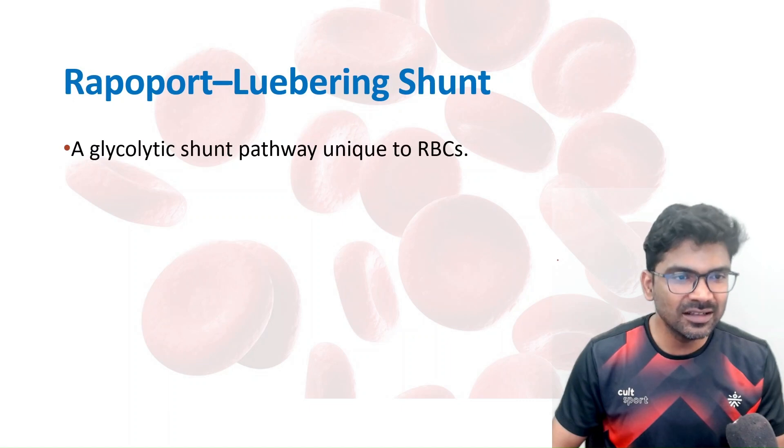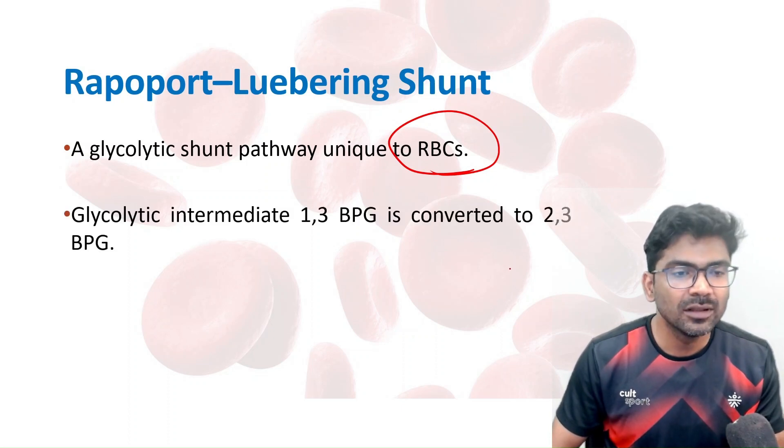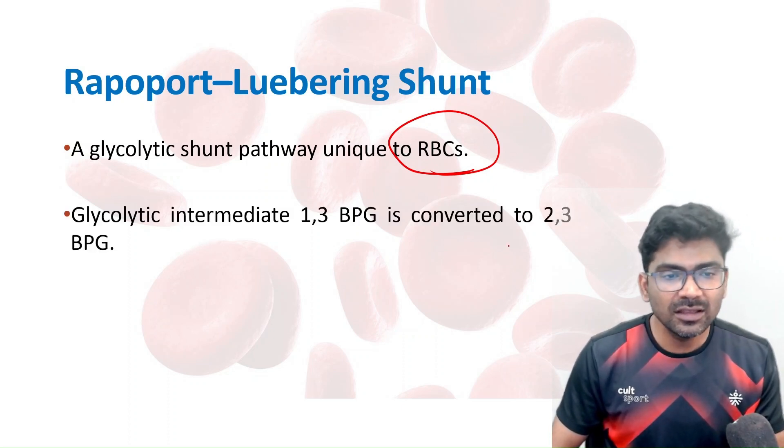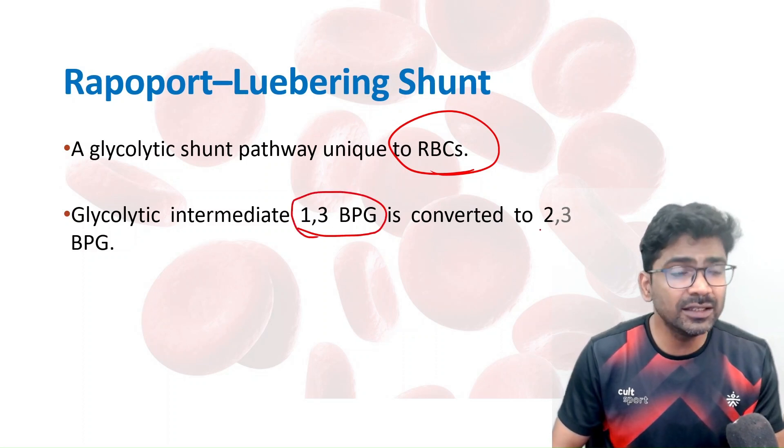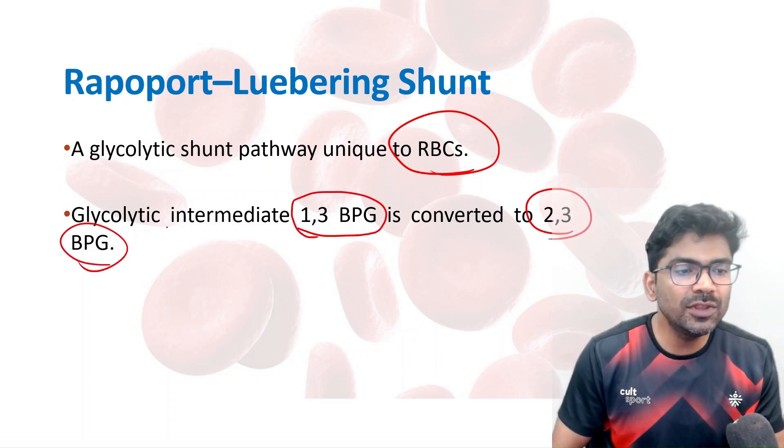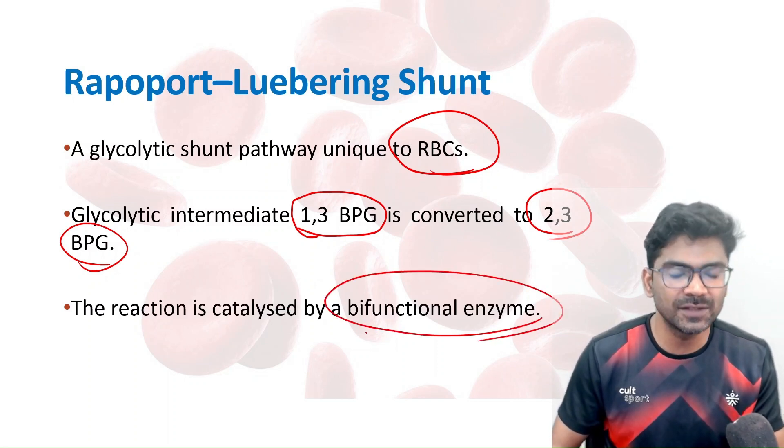The Rappaport-Luebering shunt is a glycolytic shunt pathway unique to RBCs. In this pathway, the glycolytic intermediate 1,3-bisphosphoglycerate is converted to 2,3-bisphosphoglycerate by the action of a bifunctional enzyme.